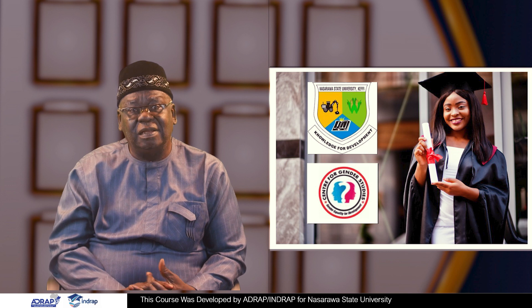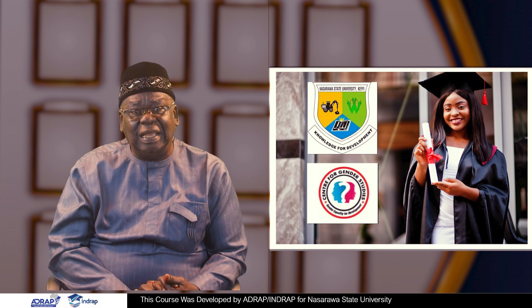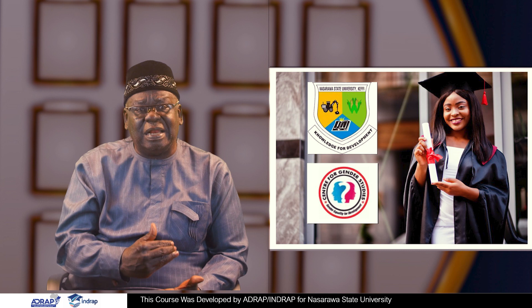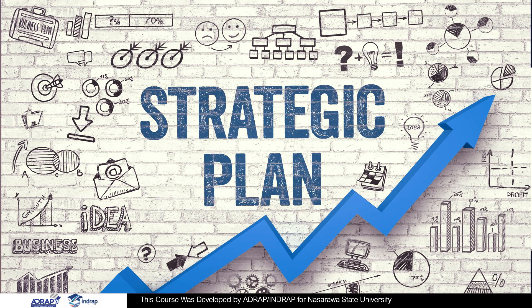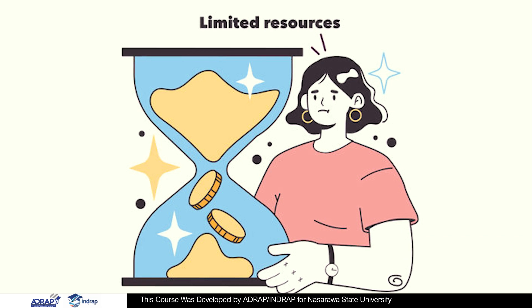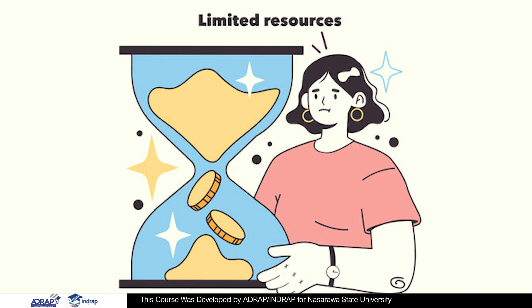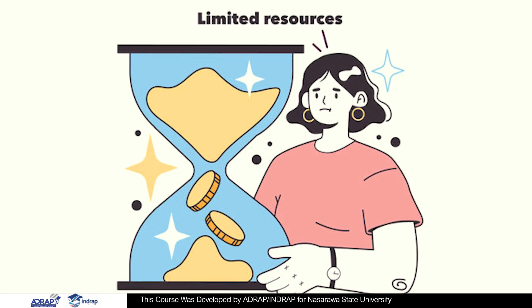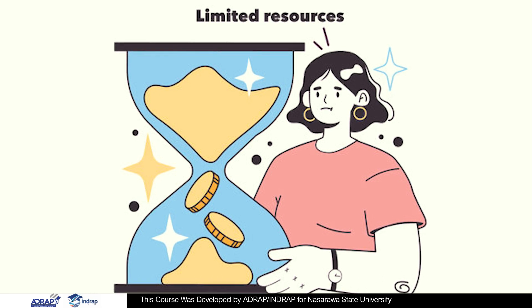From a strategic thinking standpoint, it is necessary for us to understand the steps we will take when embarking on strategic planning. Why must we embark on strategic planning? Number one, resources are scarce. And since resources are scarce, we must allocate them to various areas based on our areas of priority in order to make decisions.